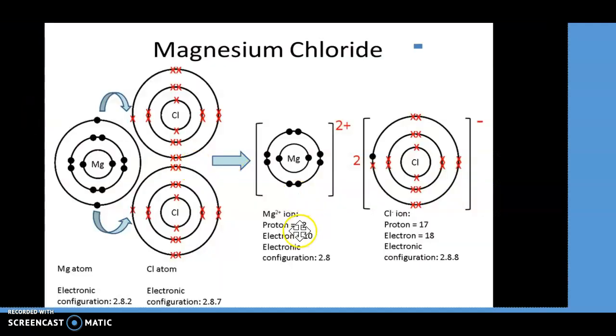If we look at this example of magnesium chloride, magnesium has a total of 12 electrons, electronic configuration of 2, 8, and 2.